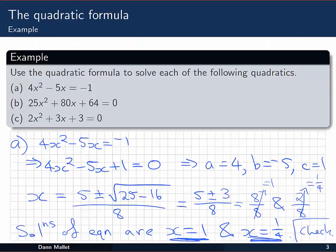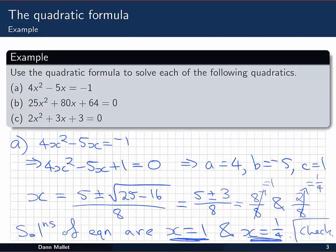In part c, we've got 2x² + 3x + 3 = 0. So 2x² + 3x + 3 = 0, a here is 2, b is 3, and c is also 3.